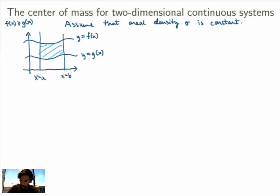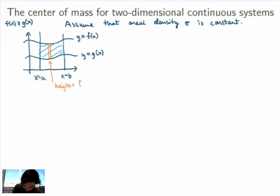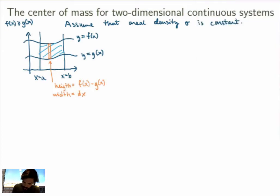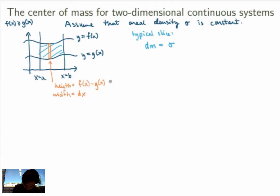To calculate the center of mass of this area with constant density, I'll use the same strategy as always: slice the problem into manageable vertical rectangles, calculate the quantities of interest for each slice, then integrate to get the whole thing. Each little rectangle has height f(x) minus g(x) and width dx. The mass of a typical slice is dm equals sigma times (f(x) minus g(x)) times dx.